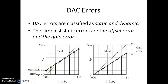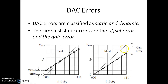We can attempt to make the offset error coincide to zero by shifting the output. However, in the process of nullifying the offset error, too much variation remains between the expected and actual output voltage — this is called gain error. So offset error is defined as the output voltage when input is 0, and the difference between actual and expected output when input is maximum, after nullifying offset, is called gain error.